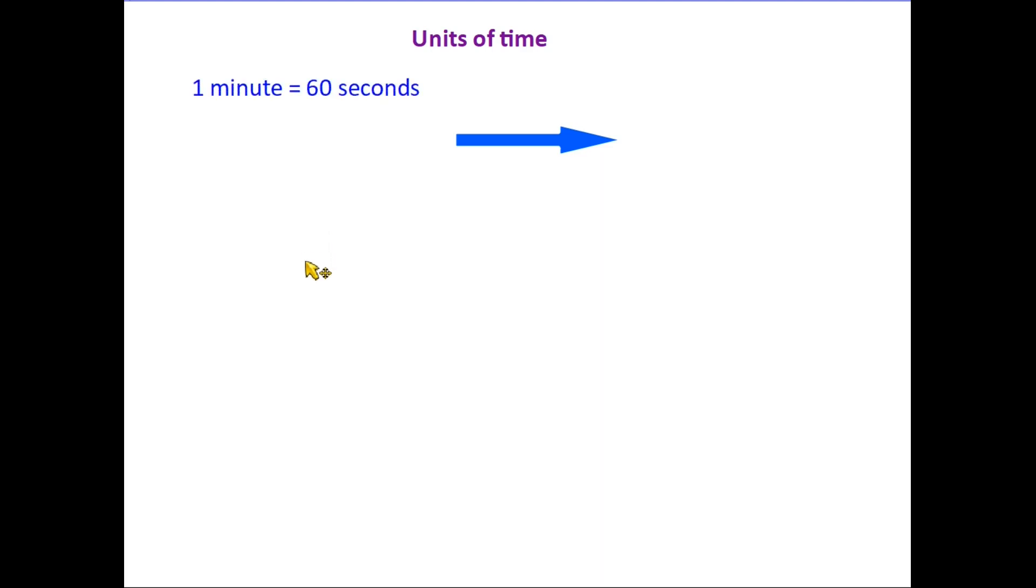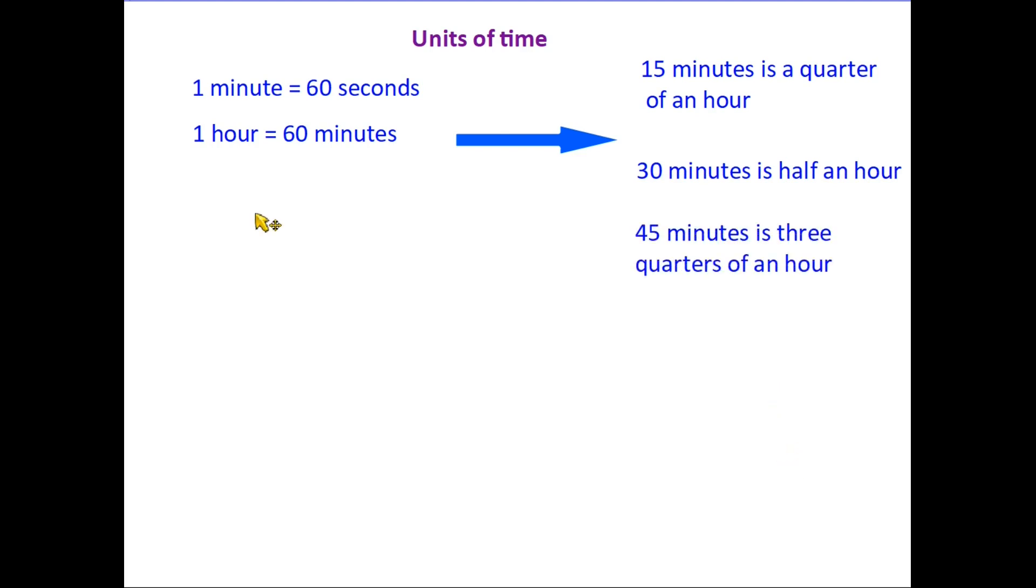First of all, we need to know that one minute is made up of 60 seconds. Also, the minutes add together and 60 minutes make up an hour. Now it's also quite useful just to be able to memorize that if 60 minutes is an hour, then 15 minutes is a quarter of an hour. Also, 30 minutes is half an hour, and therefore 45 minutes is three quarters of an hour.